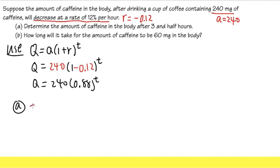Let me just tell you, we know t is equal to 3.5, and we just have to put this in, and that will give us the quantity. So let's put that down. So 240 times 0.88, and then the t is 3.5.